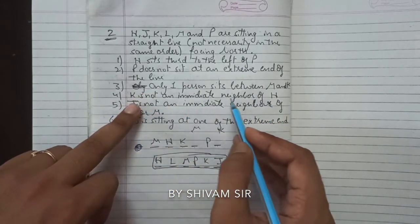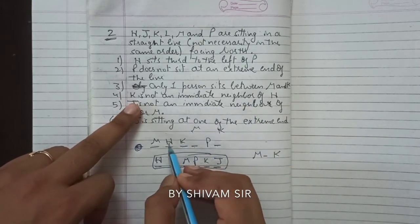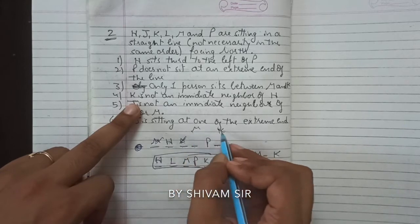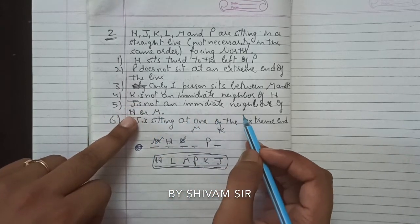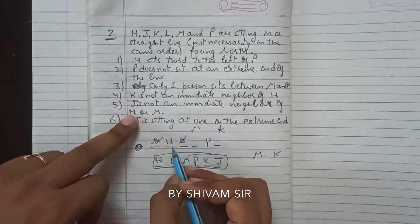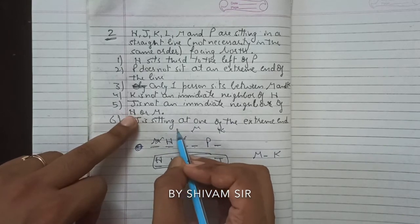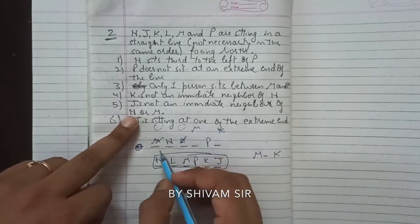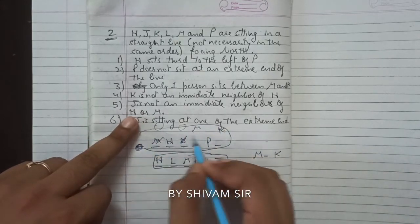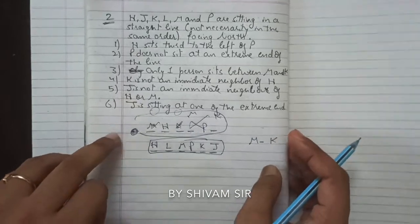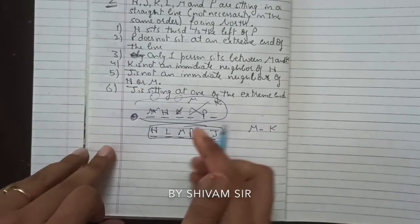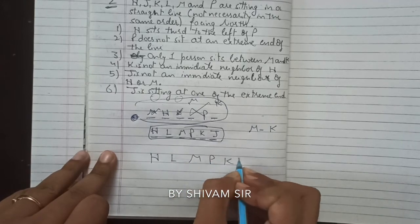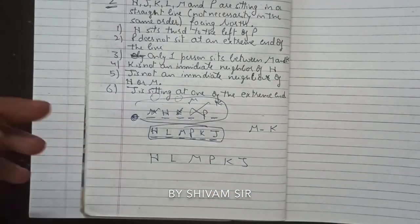Checking the second possibility: K cannot be an immediate neighbor of H, so that arrangement is eliminated. J cannot be placed adjacent to H or M in that configuration either — no valid position for J exists — so that arrangement is also eliminated. The correct final arrangement is: H, L, M, P, K, J.